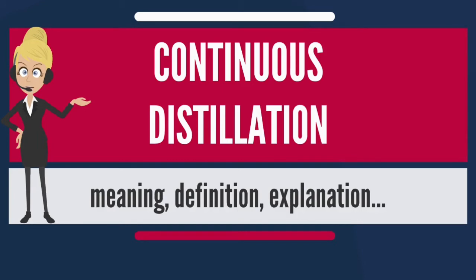The bottoms fraction has not been separately captured as a condensed vapor. An alternative to continuous distillation is batch distillation, where the mixture is added to the unit at the start of the distillation and distillate fractions are taken out sequentially in time, one after another during the distillation.